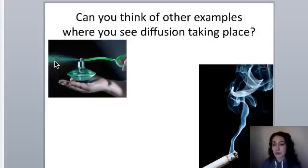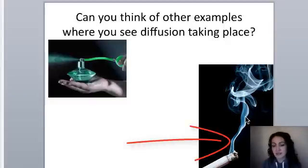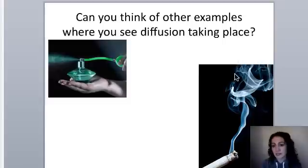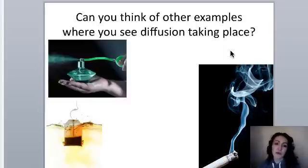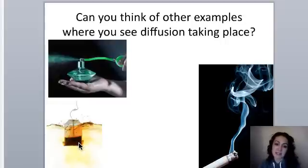Another example is smoke. Whenever you see smoke, it's really concentrated when it first comes out of a cigarette, and you can start to see it diffusing into the atmosphere, going from high concentration to an area of low concentration. Another example: if you've ever boiled water and put tea in it, the tea bag has a high concentration of tea, and the tea moves from that high concentration into the low-concentration hot water it's submerged in.